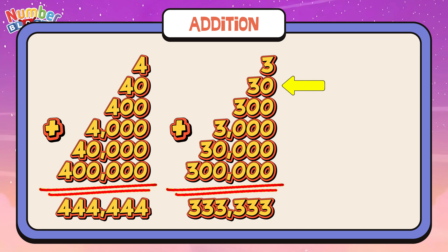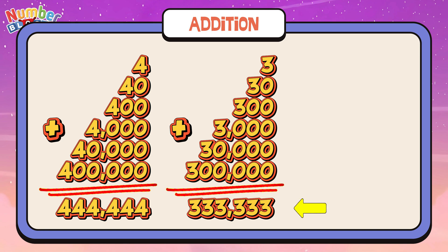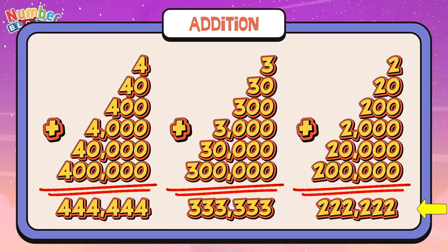Three plus three hundred plus three hundred thousand equals three hundred thirty-three thousand three hundred and thirty-three! Two plus two hundred plus two thousand plus twenty thousand plus two hundred thousand equals two hundred twenty-two thousand two hundred and twenty-two!